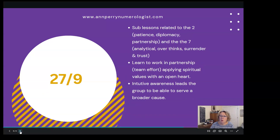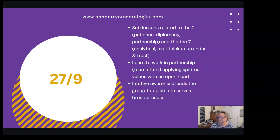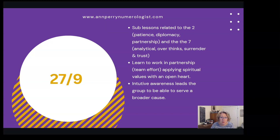The 27/9 has very different lessons. The sub-lesson of the two is about learning patience, diplomacy, and how to be a partner and team player — not independence like the one. The seven is the analytical overthinker who needs to learn to stop overthinking, surrender, and trust something bigger than themselves. Learning to work in partnership, applying spiritual values — the seven with an open heart and intuitive awareness leads the group to serve the broader humanitarian cause of the nine.